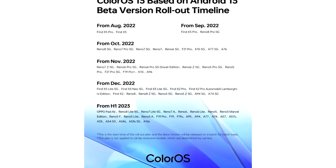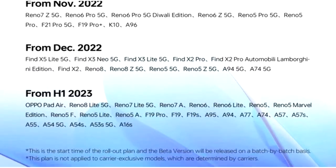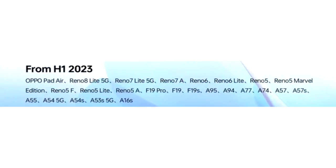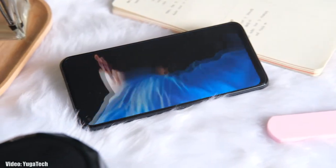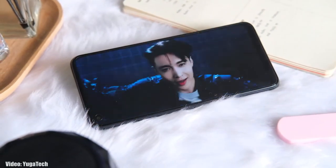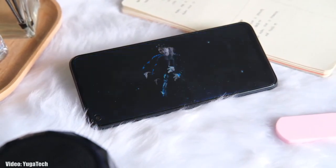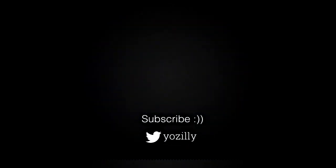As Oppo mentioned in this roadmap, all of these smartphones will start getting the ColorOS 13 Android 13 update in the first half of 2023, meaning you can expect the update to be available on your smartphone sometime between January and June. I can't give you guys an exact release date, but you will see the official Android 13 ColorOS 13 update on your Oppo smartphone by the end of June 2023.